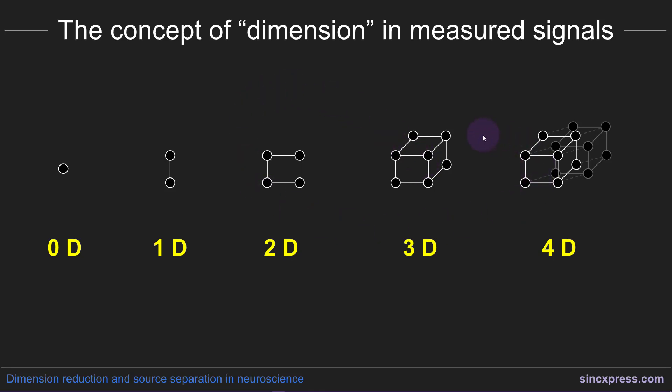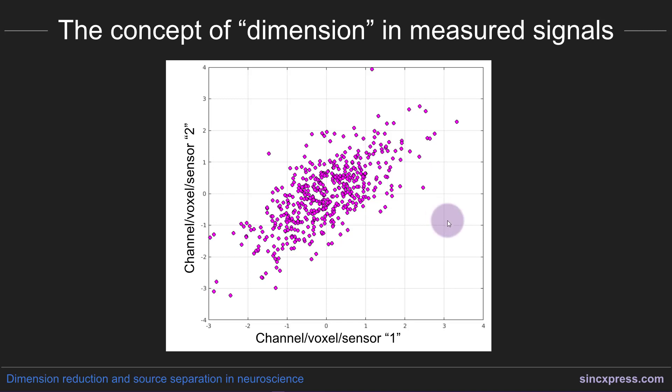This concept of dimension turns out to be really useful in linear algebra and I'm going to call on this dimension several times in this course. But because this is a very practical oriented course, because I'm focused on dimension reduction and source separation in neuroscience data and measured signals,